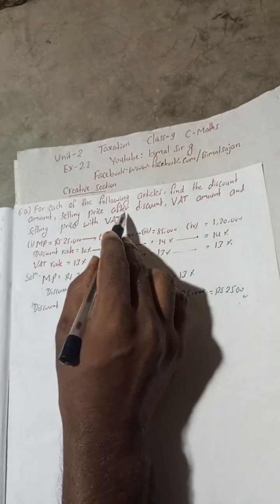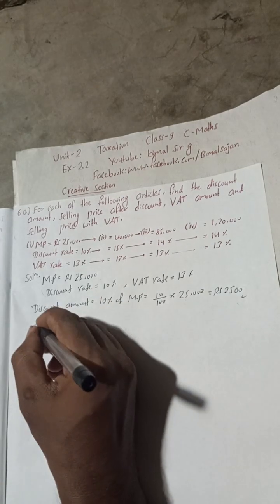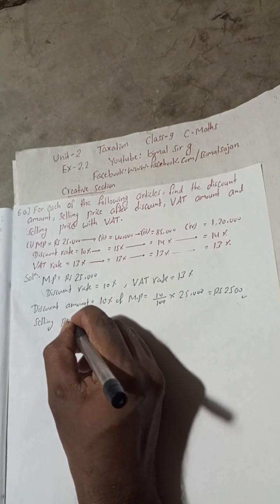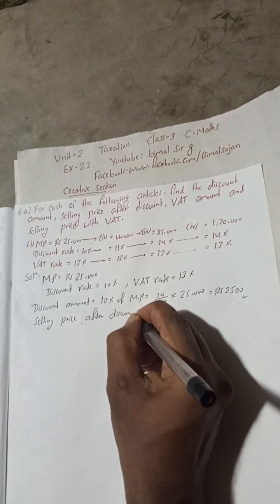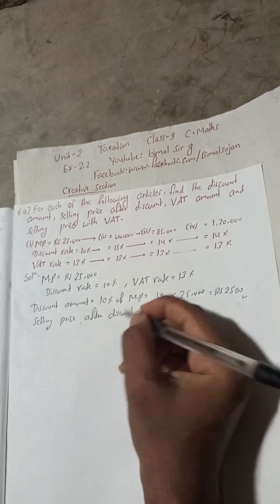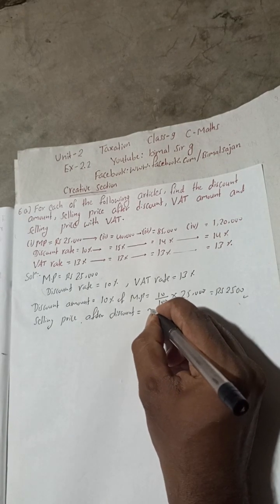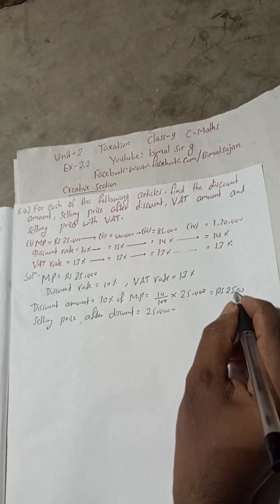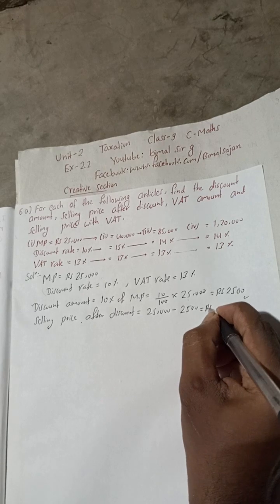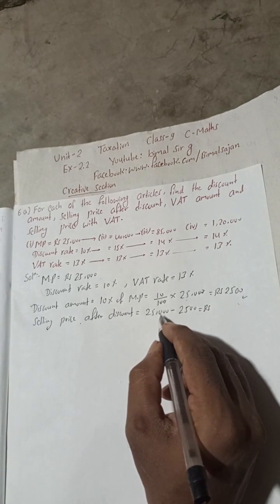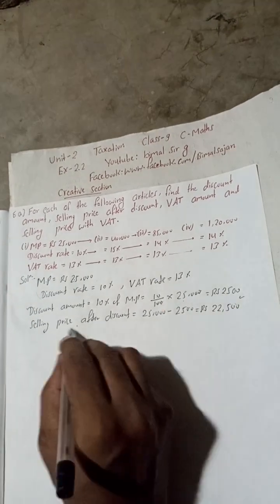Now after the discount amount, we find the selling price after discount. Selling price after discount equals marked price minus discount: 25,000 minus 2,500 equals Rs 22,500.